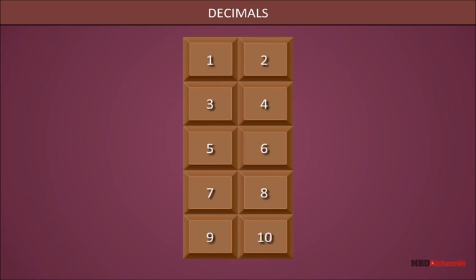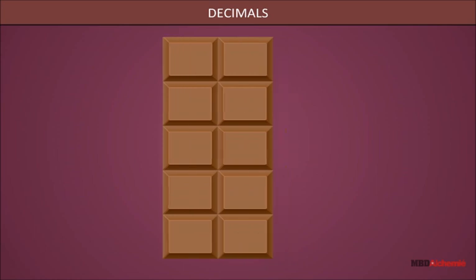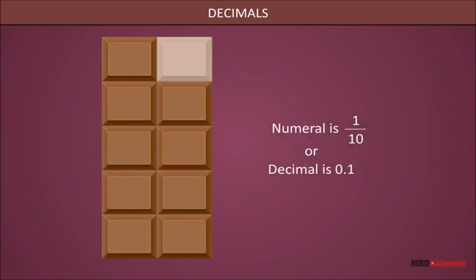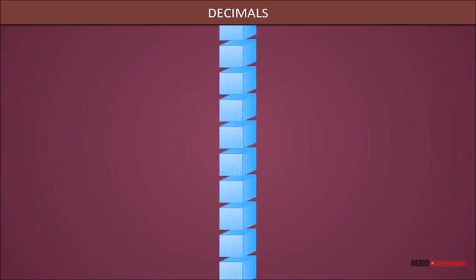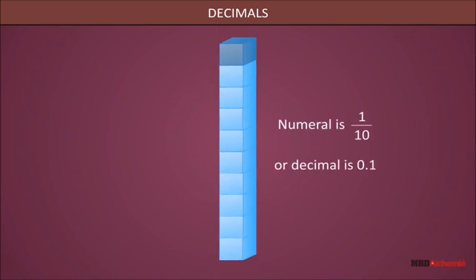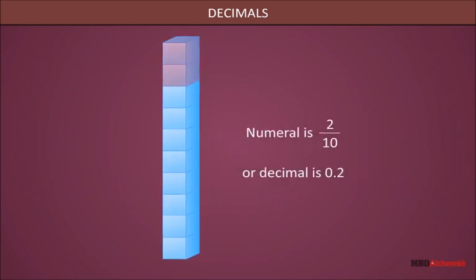Consider a bar of chocolate which has 10 parts marked on it. One part of this is called 1 tenth of a chocolate. If we join 10 boxes together to form a stick, then this colored part is 1 tenth. If 2 are colored, then it is 2 by 10, and for 6 boxes we have 6 by 10.